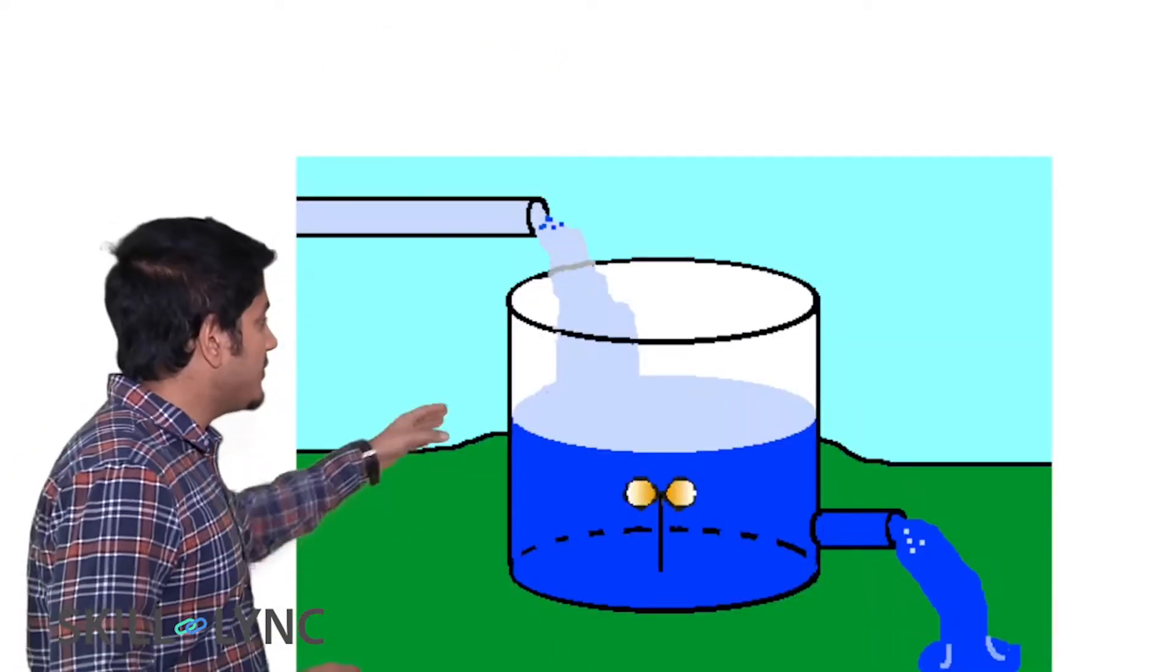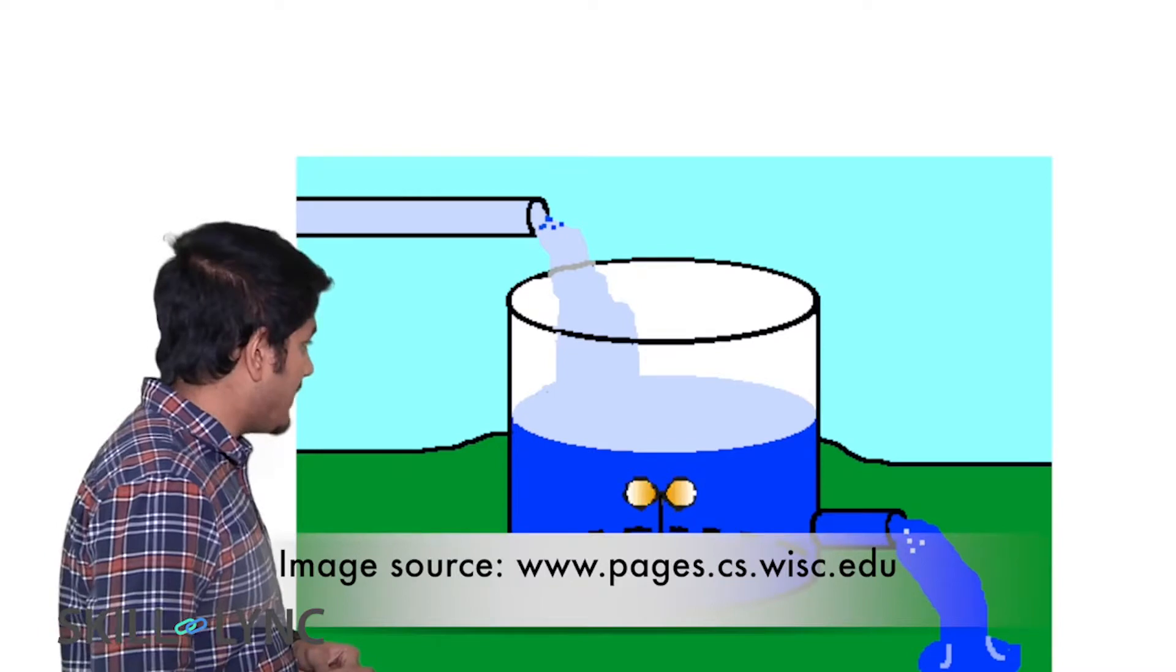So how do you represent this principle using a math equation? Here's an example. Let us consider water in a tank.